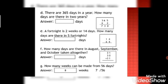Now look at the part D: there are 365 days in a year, how many days are there in two years? Days in a year we have 365 days, and now we have 2 years. In a year we have 365 multiplied by 2, 365 multiplied by 2, answer is 730.